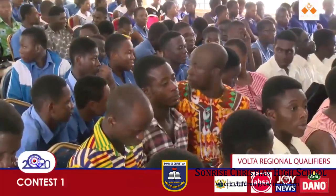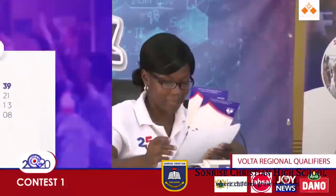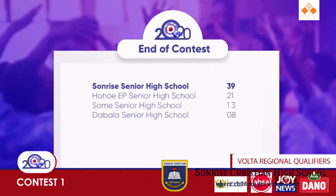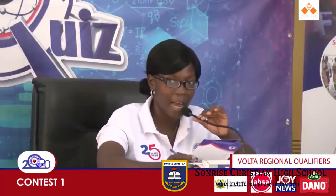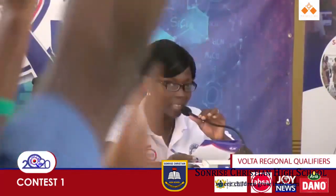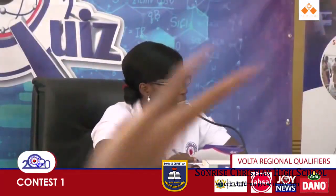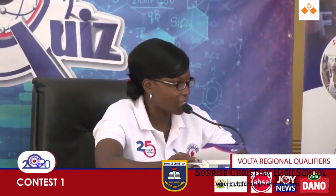At the end of the contest, the final scores are: Dabala SHS with 8 points, Sumer SHS with 13 points, Hohoe EP Senior High with 21 points, and Sunrise Senior High School with 39 points. Congratulations to Sunrise Senior High School for making it to the national championship stage.